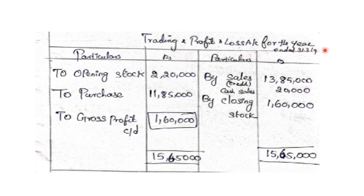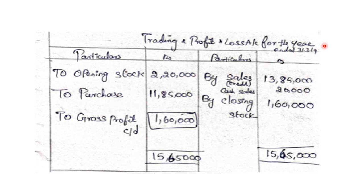Trading and profit and loss account for the year ended 31st March 2019. Debit side: opening stock 2,20,000; purchases 11,00,000 (from creditors account); wages and direct expenses also recorded. Credit side: sales — credit sales 13,85,000 and cash sales 20,000, giving total sales of 15,65,000; closing stock 1,60,000.